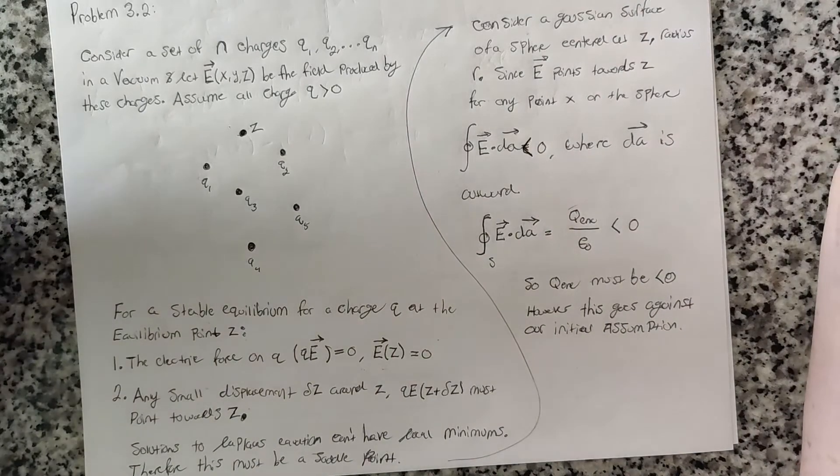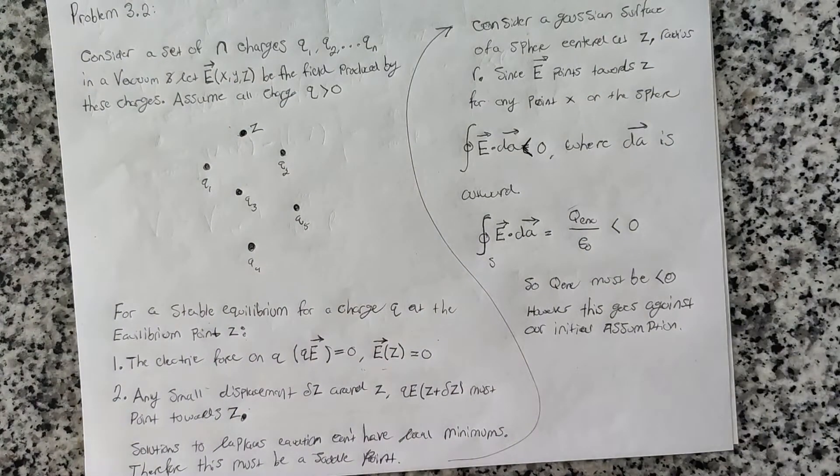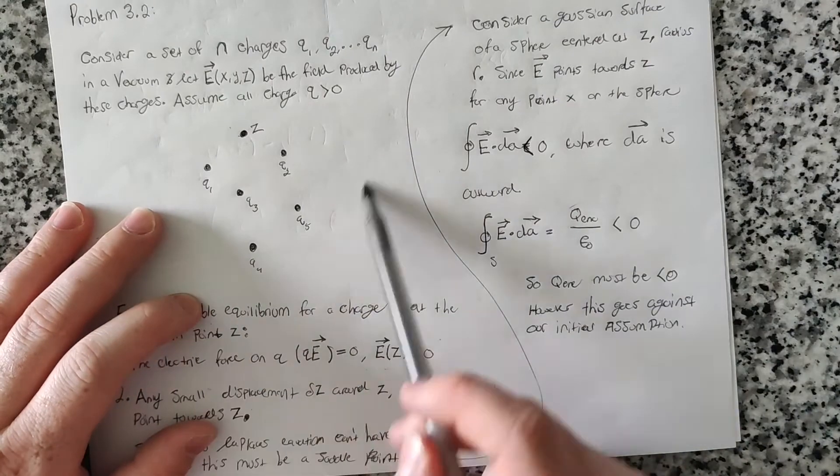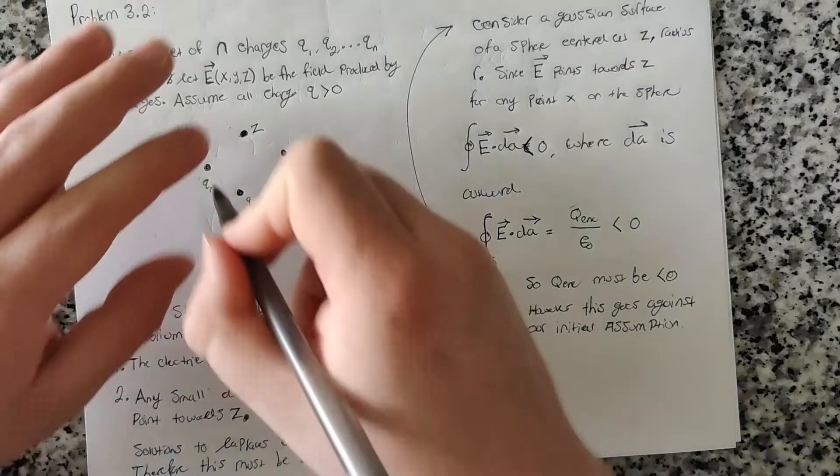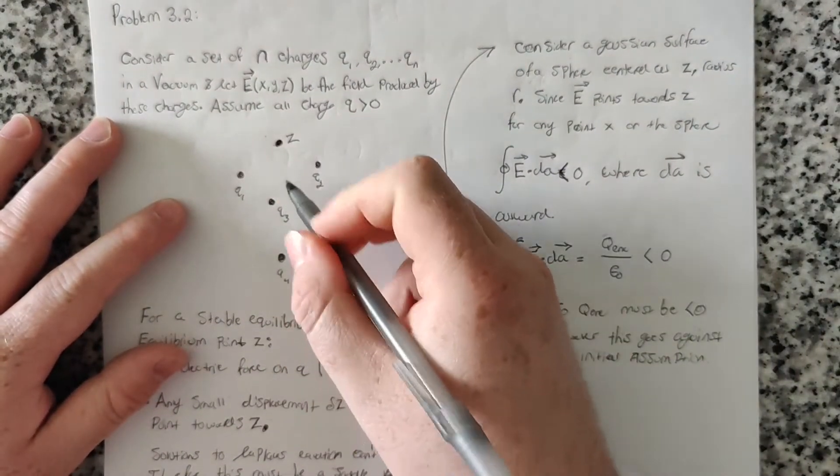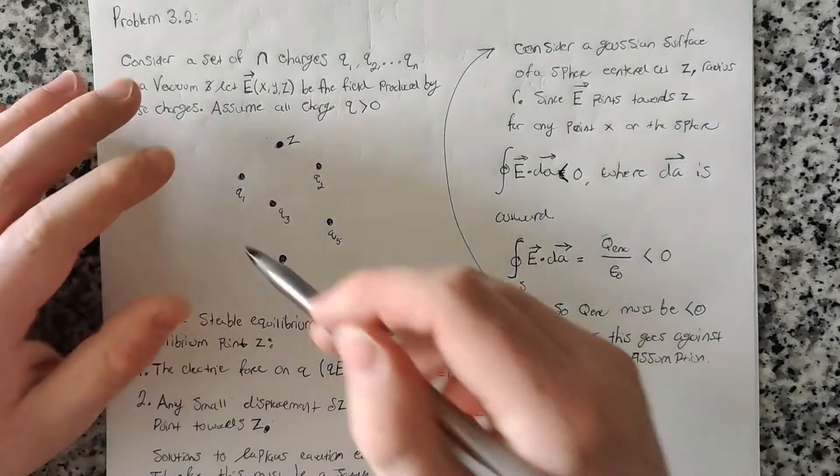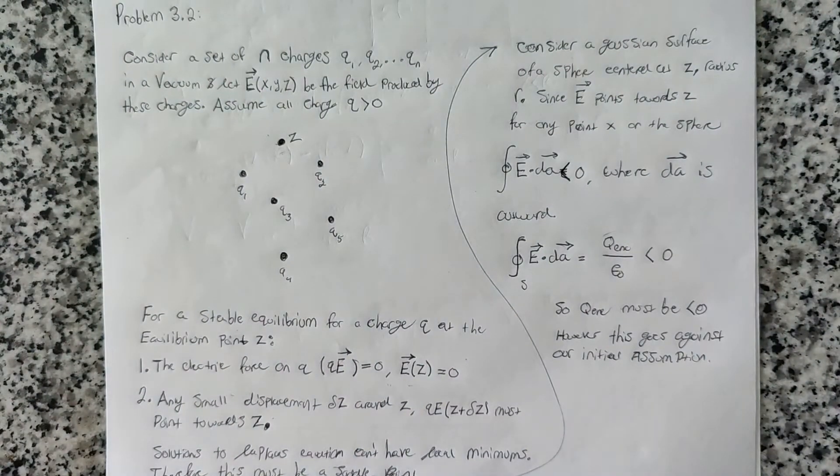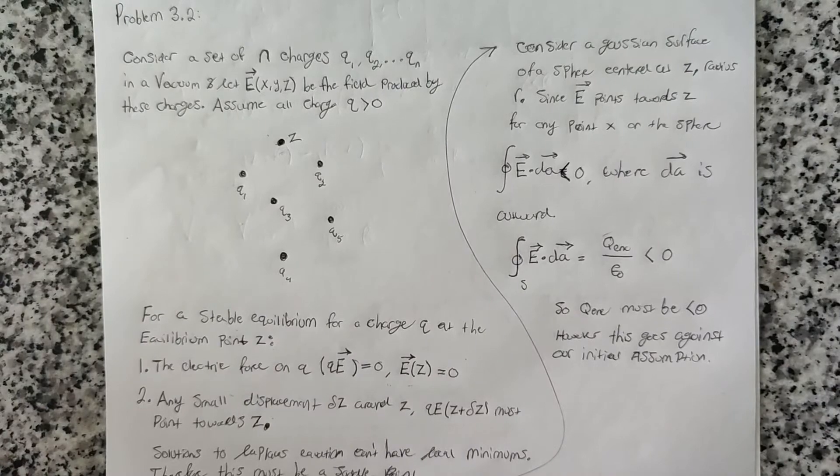There's one way to think about this in terms of Laplace's equation. We know that solutions to the potential - these charges produce a potential throughout all of space. If this were a stable equilibrium point, for the cube configuration, the point they're talking about is in the center of the cube. For Laplace's equations, solutions to Laplace's equations cannot have local minimums. This is what was gone over in previous sections of Griffiths.